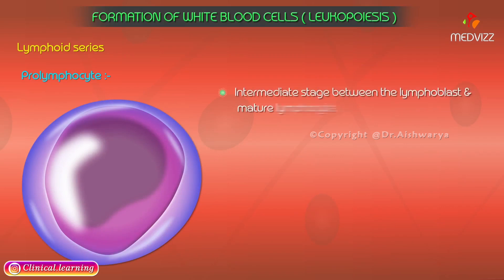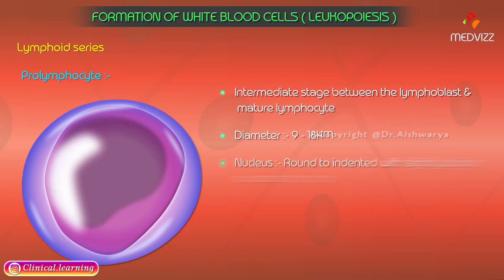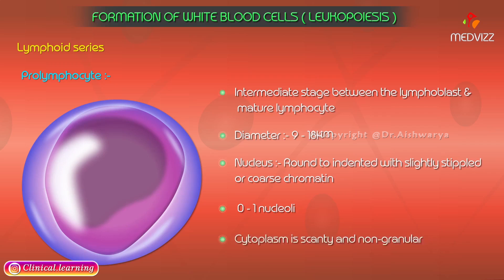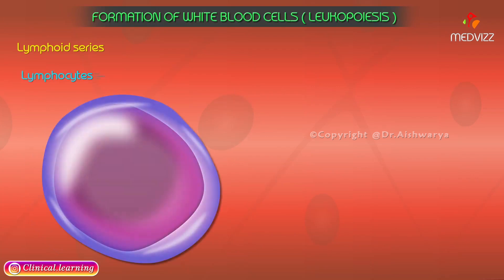The prolymphocyte is the intermediate stage between the lymphoblast and the mature lymphocyte. Its features include a diameter of 9 to 18 micrometers, a nucleus that is round to indented with slightly stippled or coarse chromatin and zero to one nucleoli, and cytoplasm that is scanty and non-granular.